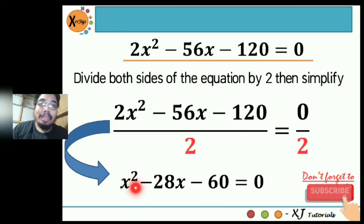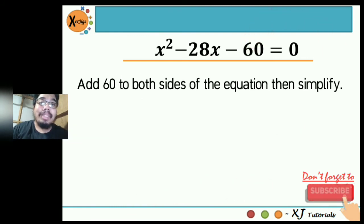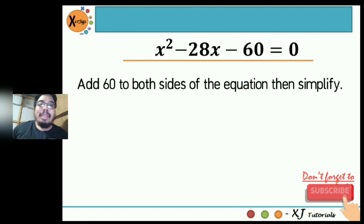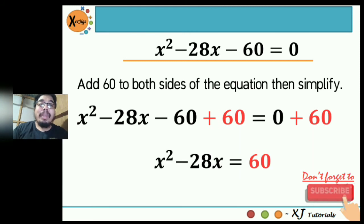2x squared divided by 2 is x squared, negative 56x divided by 2 is negative 28x, negative 120 divided by 2 is negative 60, and 0 divided by 2 is 0. After getting this equation, we need to move 60 to the right side by adding 60 to both sides, then simplify. So x squared minus 28x minus 60 plus 60 equals 0 plus 60. The 60 cancels on the left, leaving x squared minus 28x equals 60.